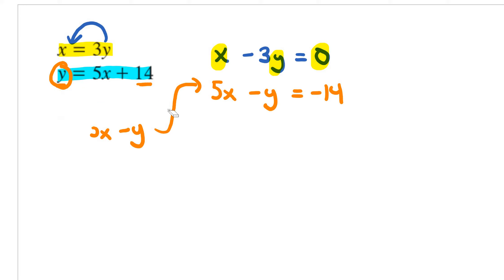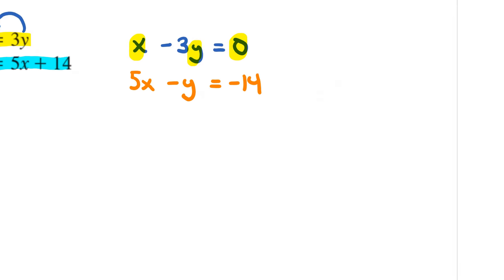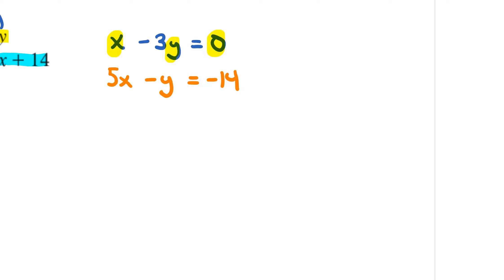So that's step number one — you want to rearrange the equation so that you have the x variables first, the y variables second, and the constants on the right-hand side. That's the first step, and you'll notice that's still not enough; we still have to do a little bit more work. I noticed I have a 5 here, so a very good strategy is: what can you do to the first equation so that you have a 5 as a leading coefficient as well?